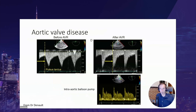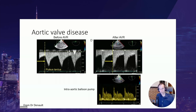Here is an example of how aortic valve disease can influence the renal resistive index and the overall shape of the kidney Doppler waveform. Before aortic valve replacement, the systolic upstroke in the arterial waveform is of lower velocity and the acceleration is more sluggish. After aortic valve replacement, the systolic upstroke is brisk. You can also see the effect of an intra-aortic balloon pump on the arterial Doppler waveform in the bottom of the screen.